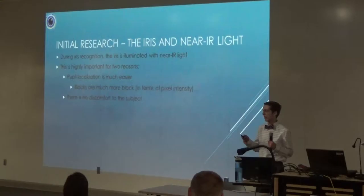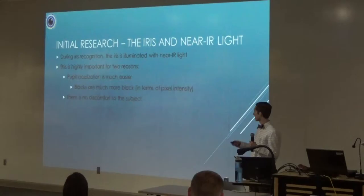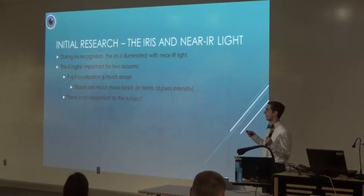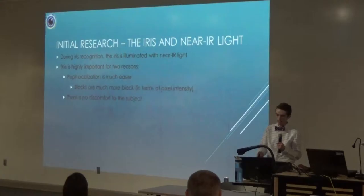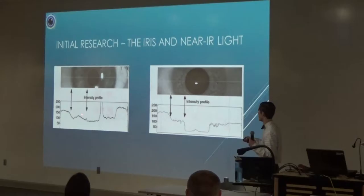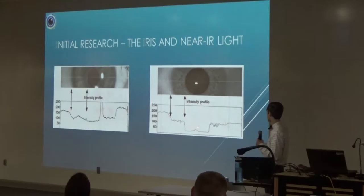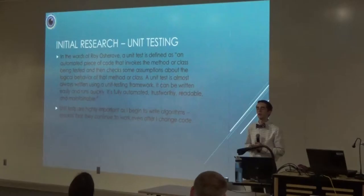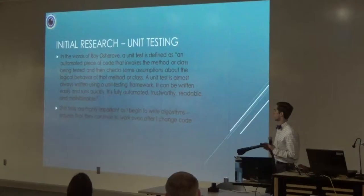Now I'll talk about the iris and near-infrared light. Almost all iris recognition processes use near-infrared light, and there are two reasons for this. One, it makes the blacks much more black in terms of pixel intensity - when you graph pixel intensity across the eye illuminated by visible light versus near-infrared light, the near-infrared shows a much clearer drop in pixel intensity at the pupil boundary, which can then be used to determine the boundaries of the pupil. Two, there's no discomfort to the subject since near-infrared light isn't visible - unlike a camera flash, which would be blinding.